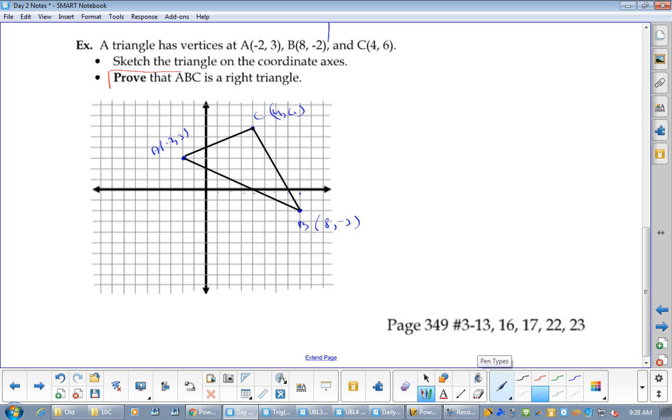Now it says prove that this is a right triangle. A proof is using mathematical reasoning that has been accepted to prove something else. What do you know about right angle triangles? One of the angles is a right angle. If you were looking at this triangle, what would be your guess where it is? At C. But you can't say, oh I took out my protractor and I measured it and it was pretty close. You can't say that. That's not a proof. So how can you prove that it's 90?